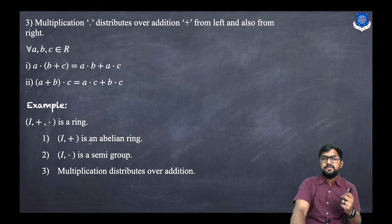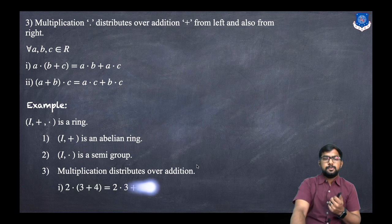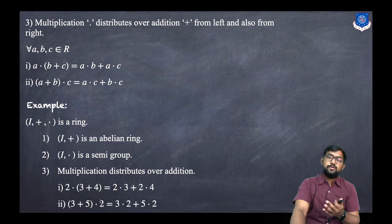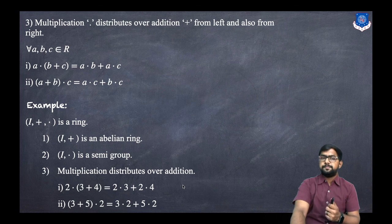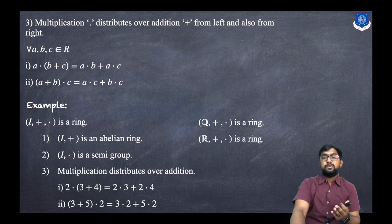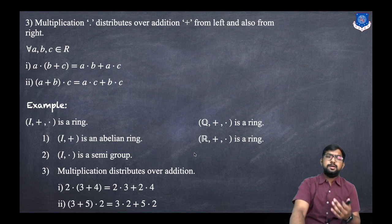For example, 2·(3 + 4) = 2·3 + 2·4, and (3 + 5)·2 = 3·2 + 5·2. Similarly, (ℚ, +, ·), (ℝ, +, ·), and (ℂ, +, ·) are all rings. These are the examples of rings.